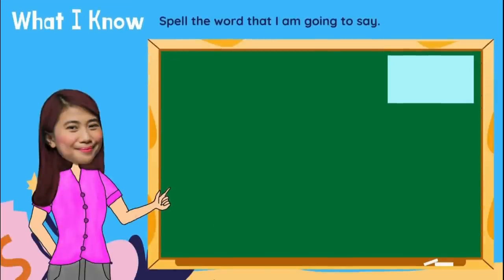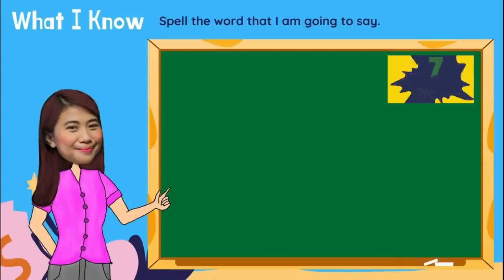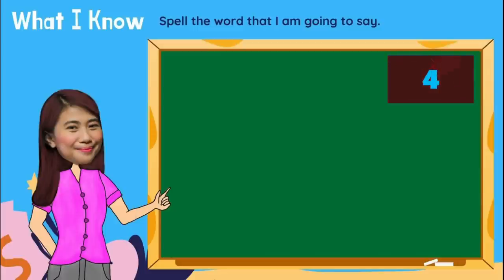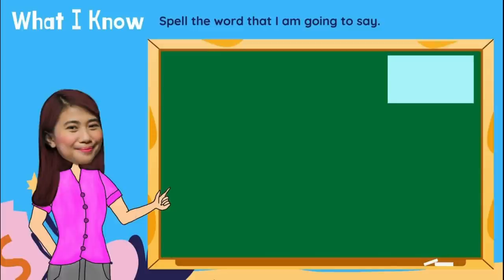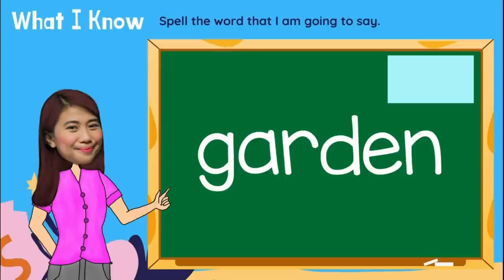Now, spell the word garden. Type now your answer in the comment box, and be careful in your spelling. And the spelling of garden is G-A-R-D-E-N. Garden. If this is your answer, you are awesome!